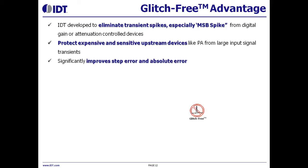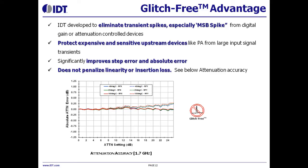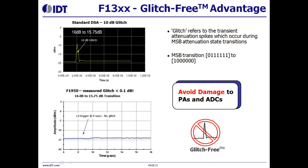Glitch-free improves step error and absolute error significantly without penalizing linearity or isolation. As you can see, IDT-F3070 has an excellent 0.2 dB absolute attenuation error at 1.7 GHz. This is a measured glitch on a competing DSA — at only 0.25 dB gain change at the MSB, a 10 dB large glitch occurs. This large glitch through the DPD loop could damage your expensive PA and ADC.